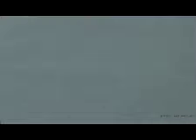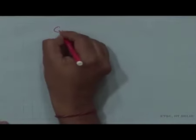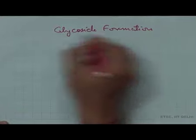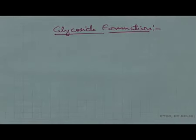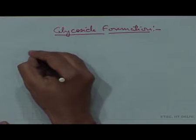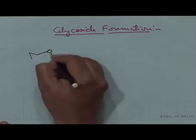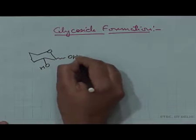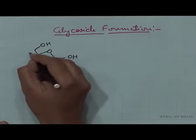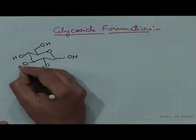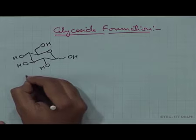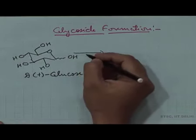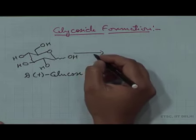Let us continue with glycoside formation. In glycoside formation, we discussed about the treatment of alpha-D-glucose with methanol in the presence of HCl. As we know, alpha-D-glucose has a polyhydroxy group in its framework. In presence of methanol and hydrochloric acid, it forms two glucosides: methyl alpha-D-glucopyranoside and methyl beta-D-glucopyranoside.